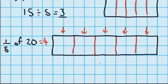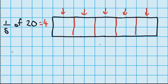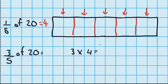Now let's see if we can use this question here to help us work out what 3 fifths of 20 is. Well up here we worked out that 1 fifth of 20 was 4. So 3 fifths must be 3 times as much. So I can go 3 times 4 equals 12.